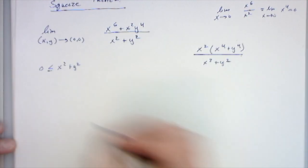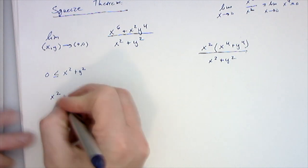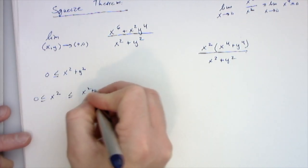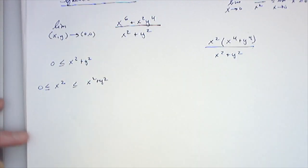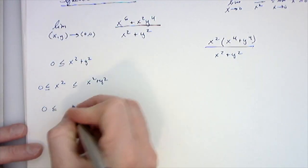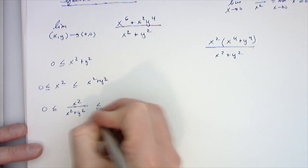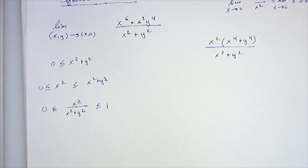And here's what I know. I know that x squared is also positive, and it's less than or equal to x squared plus y squared. And then I can divide everything by x squared plus y squared. So that 0 is less than or equal to x squared over x squared plus y squared, which is less than or equal to 1. If I divide x squared plus y squared by x squared plus y squared, I get 1.